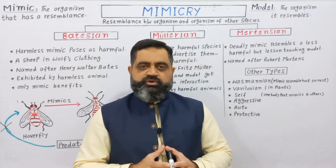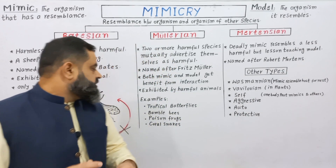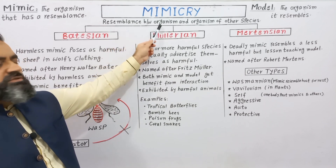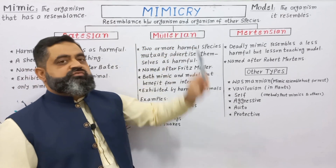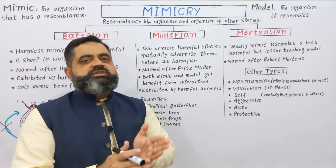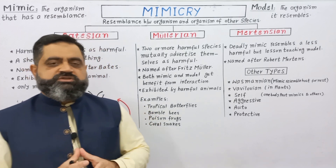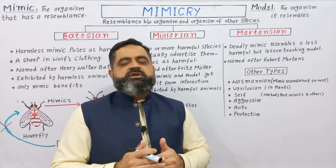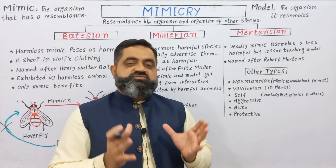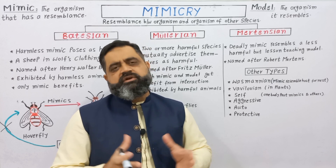First of all, we are going to describe the definition of mimicry. Resemblance of one species with another species is known as mimicry. In this process, usually one animal which is harmless resembles another animal which is very harmful, to protect itself from the attacks of predators. There are different types of mimicry, but the most important are Batesian Mimicry, Mullerian Mimicry, and Mertensian Mimicry.